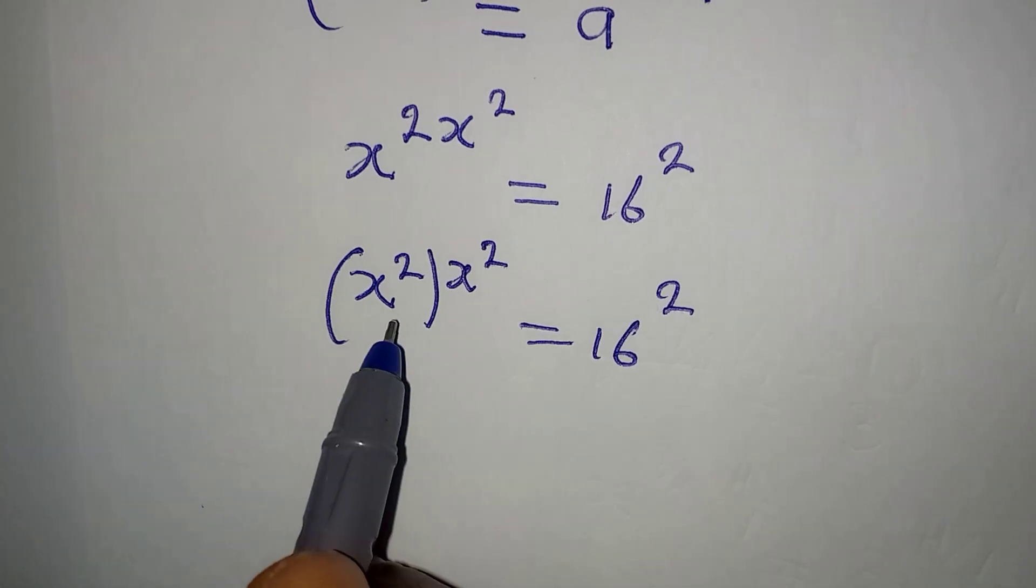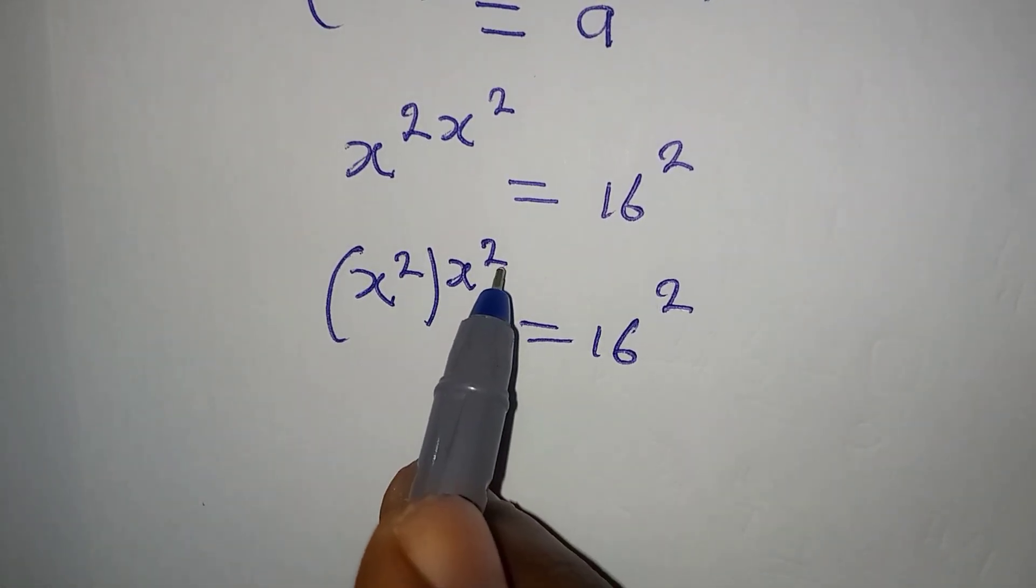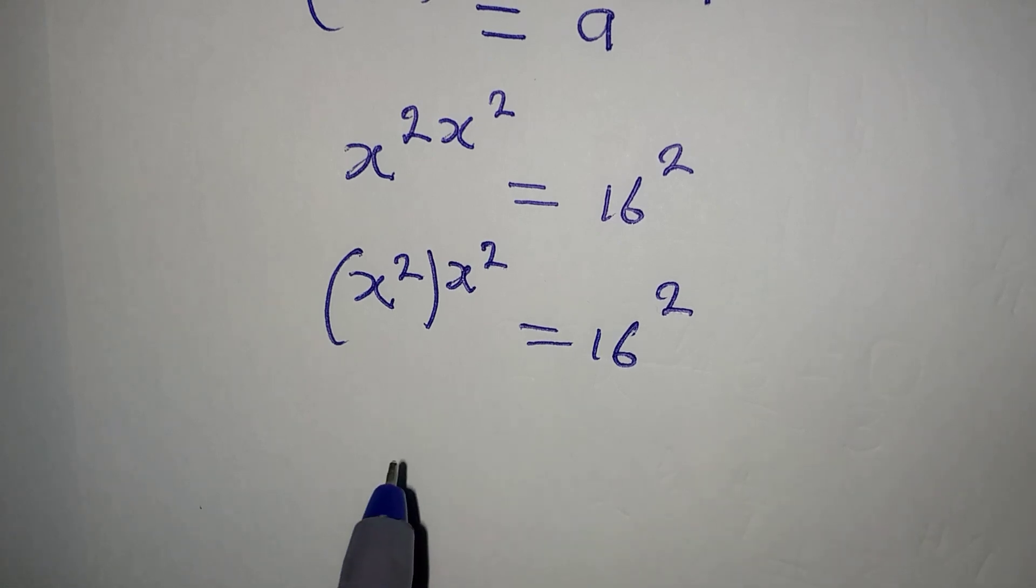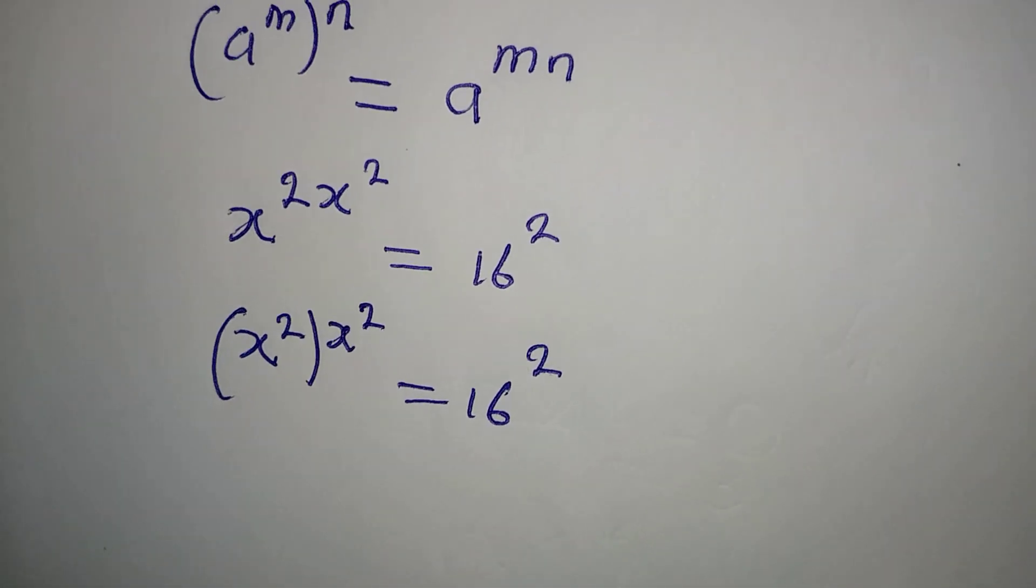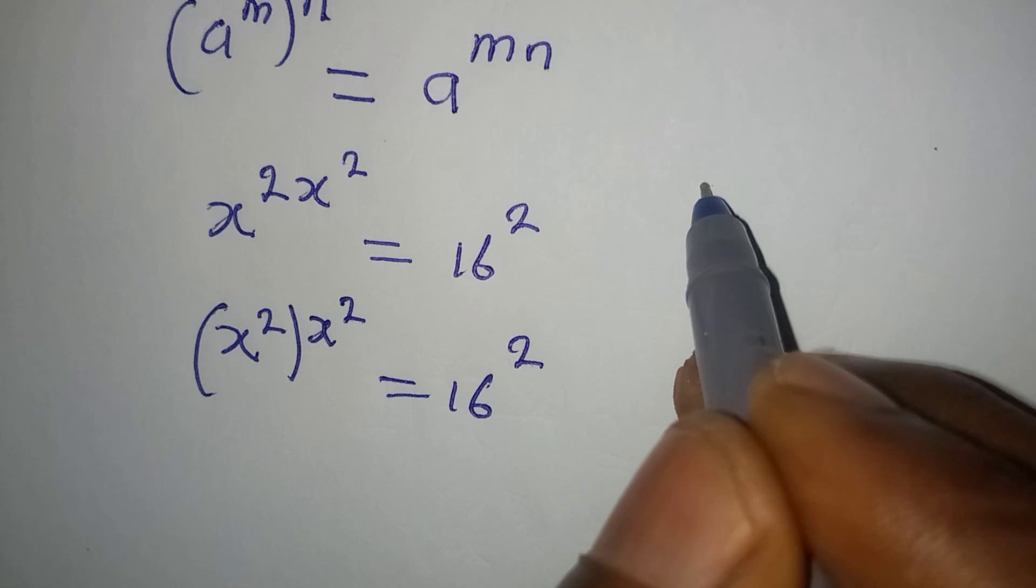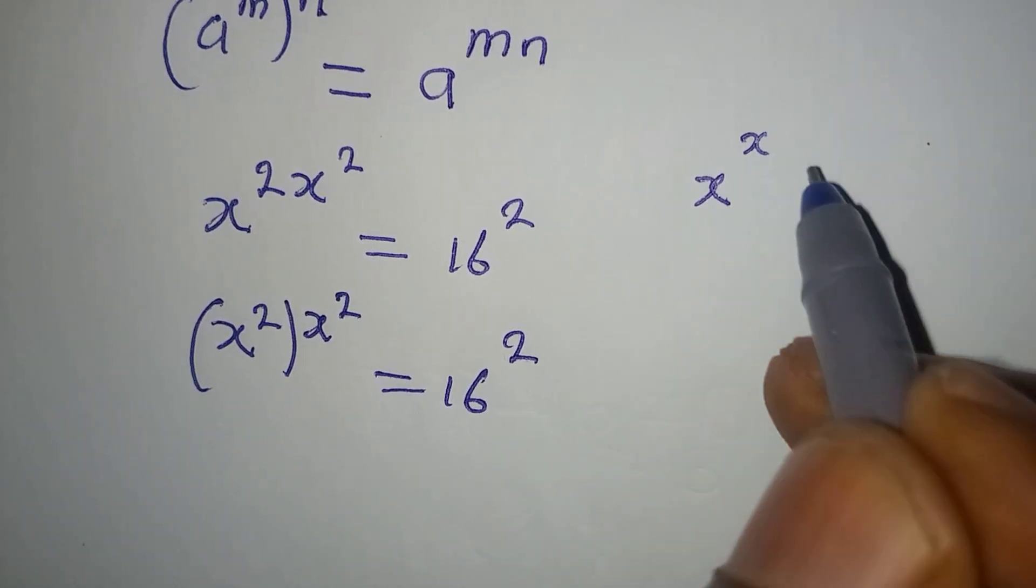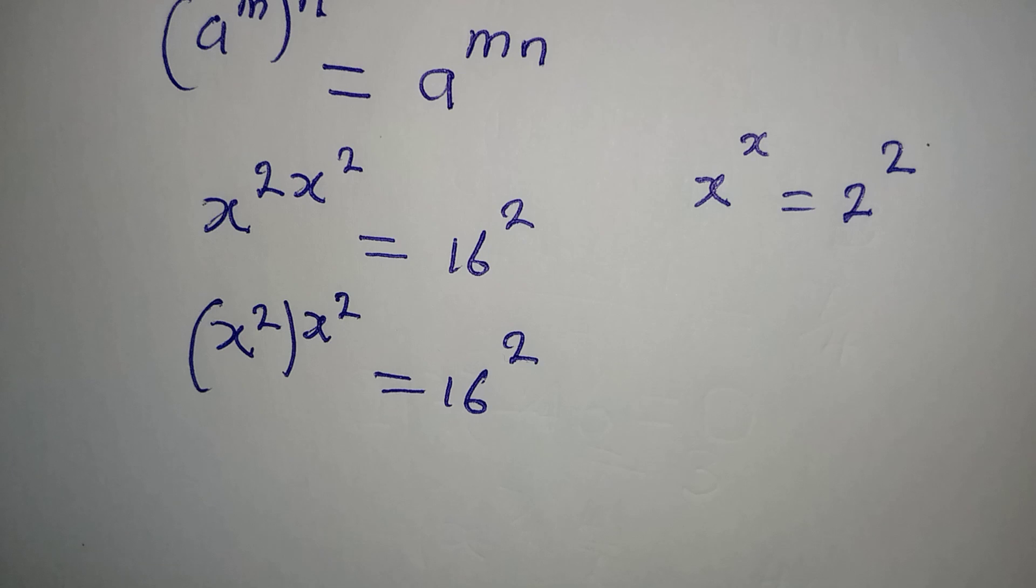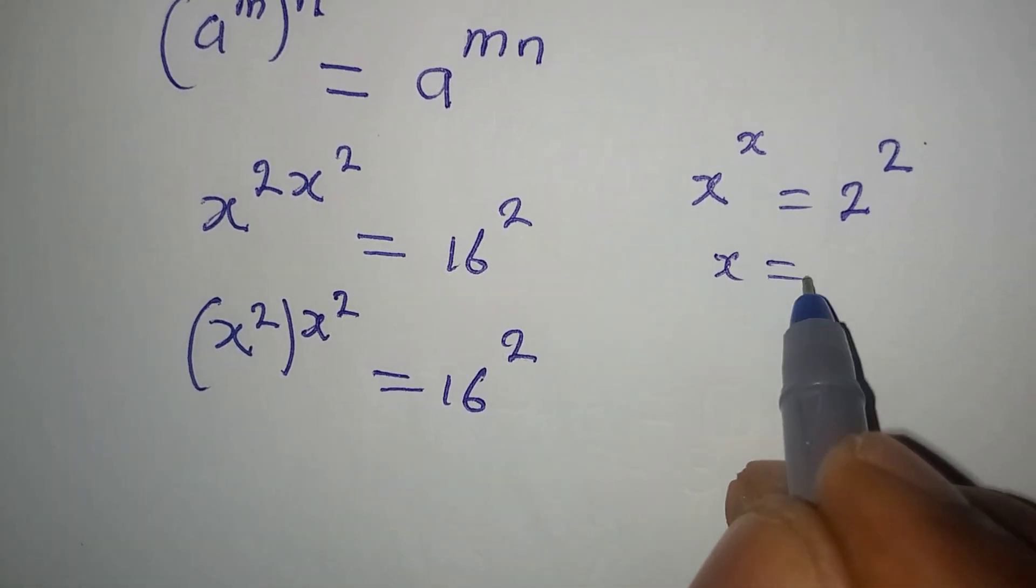And what do we observe? We have the same thing here: x squared, x squared. See what I'm trying to say, if you have something like x to the power of x equal to 2 to the power of 2...